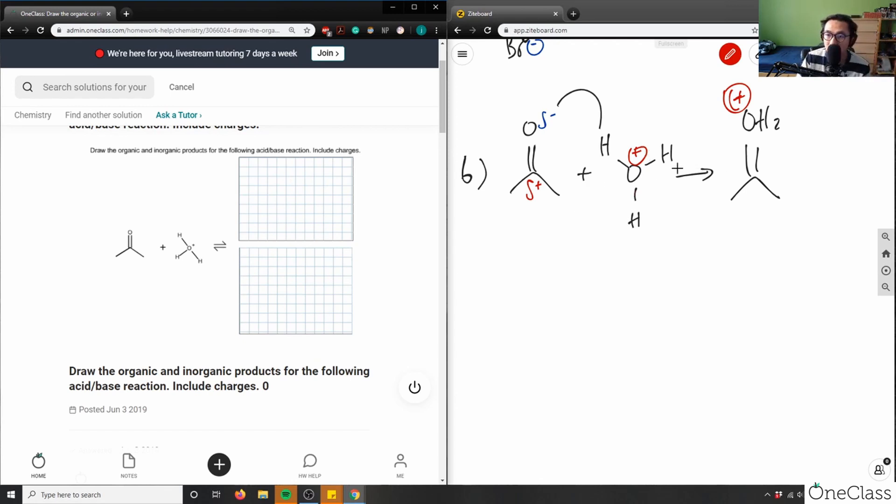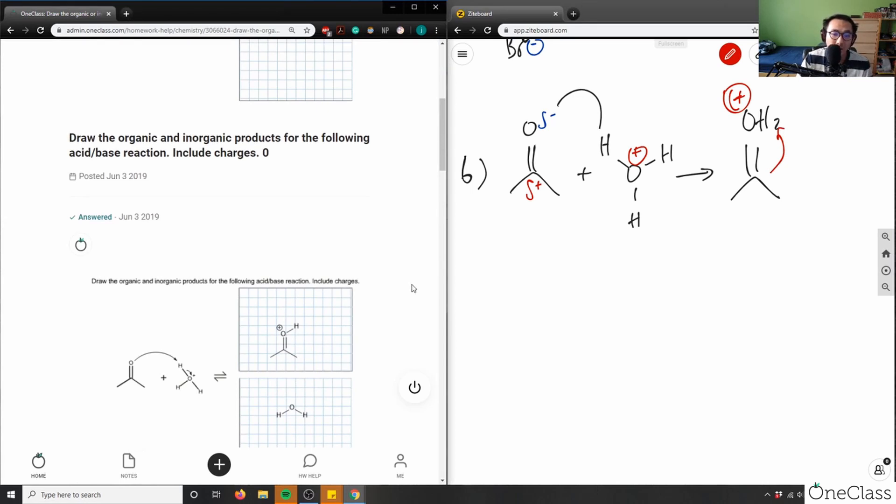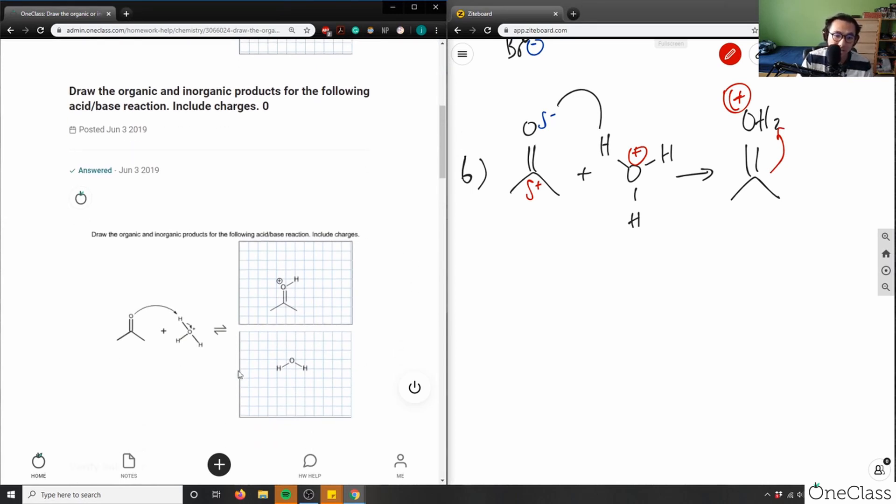And then what happens is that this thing means it's going to be a good leaving group. And then this OH here can either - this can get kicked out and be reduced by an alcohol here. So I would get some sort of alcohol and this here is correct, right? I get some sort of alcohol here, or here's water, right?